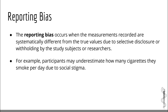Now let's move on to the reporting bias. The reporting bias occurs when the measurements recorded are systematically different from the true values due to selective disclosure or withholding by the study subjects or researchers. For example, participants may underestimate how many cigarettes they smoke per day due to social stigma. This bias is similar to recall bias; however, unlike recall bias, the subjects involved are consciously aware that they are altering their response. Both researchers and subjects may contribute to reporting bias.